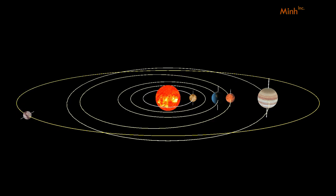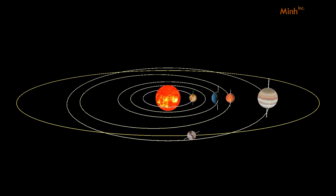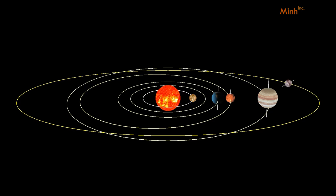Pluto rotates in an elliptical orbit, not the way other planets rotate. Six Earth days is one day on Pluto, and it takes 248 years to make a full orbit around the sun. So its path is not common — it is elliptical.